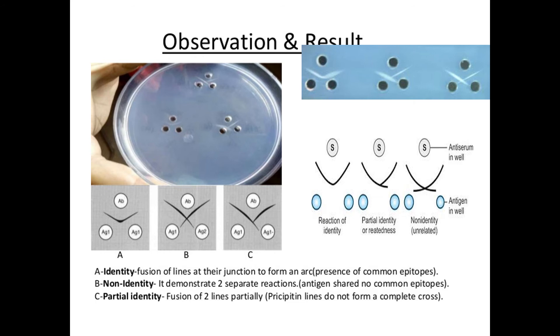After overnight incubation, take out the gel and observe for the precipitate lines between the antigen and antiserum wells by holding the glass plate to the light or against a dark background for contrast to visualize the bands better.